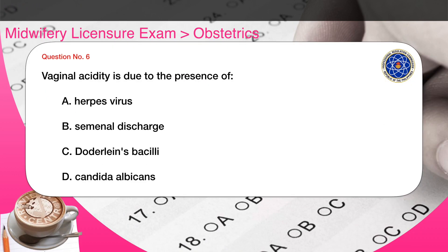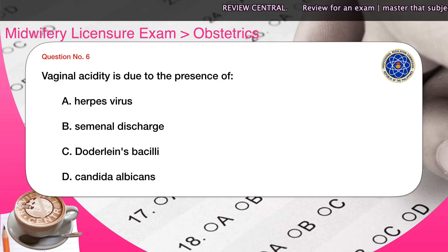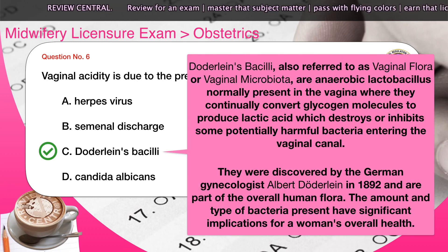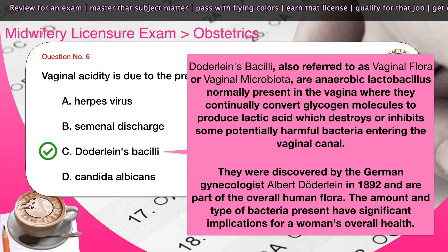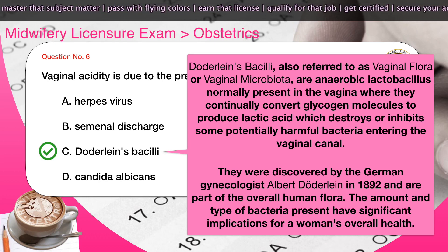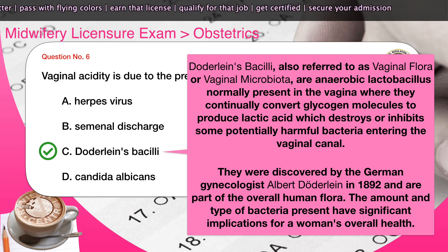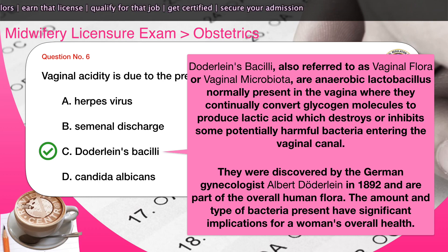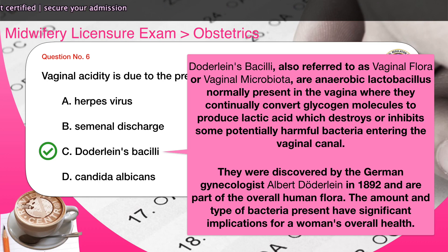Question number six: Vaginal acidity is due to the presence of — A) herpes virus, B) seminal discharge, C) Doderlein's bacilli, D) Candida albicans. The correct answer is C. Doderlein's bacilli, also referred to as vaginal flora or vaginal microbiota, are anaerobic lactobacilli normally present in the vagina where they continually convert glycogen molecules to produce lactic acid, which destroys or inhibits potentially harmful bacteria entering the vaginal canal. They were discovered by the German gynecologist Albert Döderlein in 1892 and are part of the overall human flora.